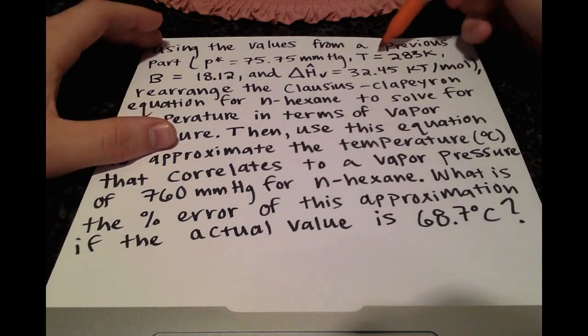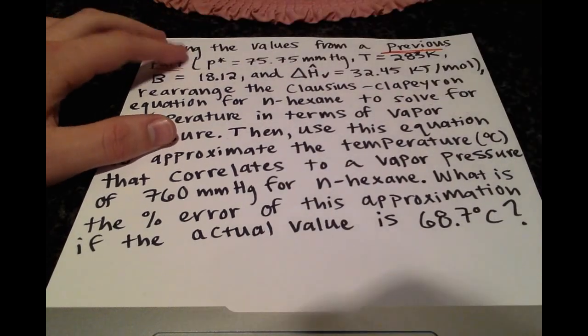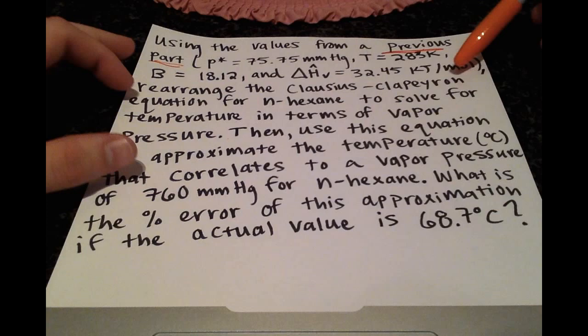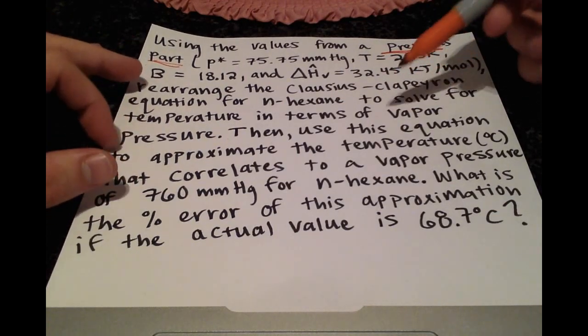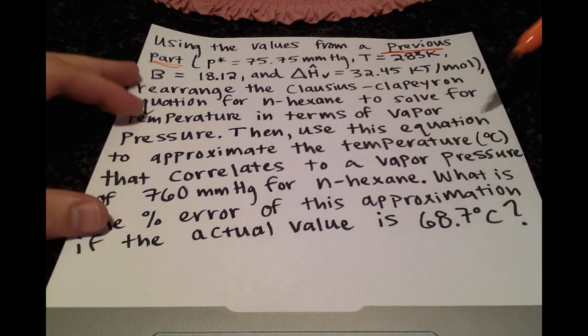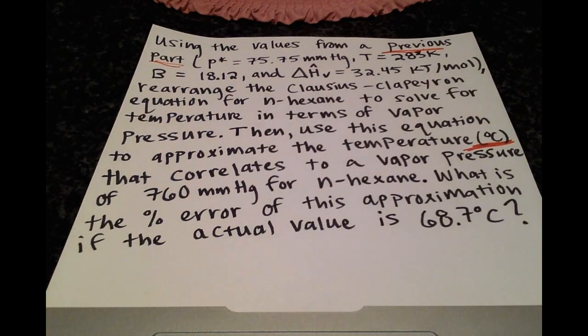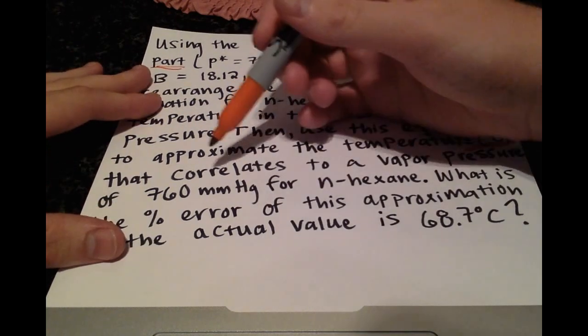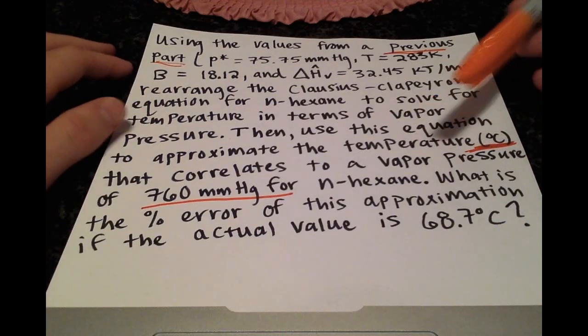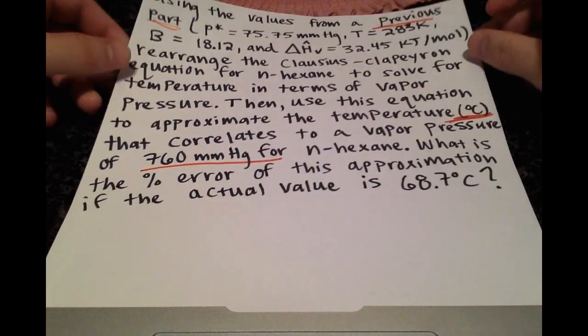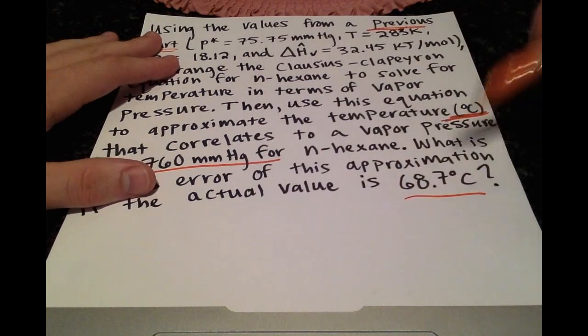We're given some values from the previous video. We need to rearrange the Clausius Clapeyron equation to solve for temperature in terms of vapor pressure, then use this equation to approximate the temperature in degrees Celsius that correlates to a vapor pressure of 760 millimeters of mercury. The last part is calculating the percent error for this approximation if we know the actual value.